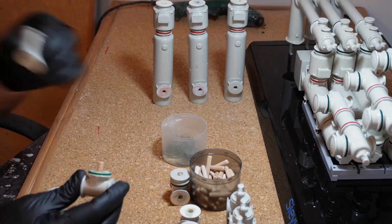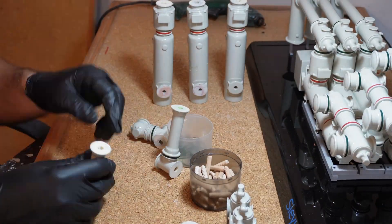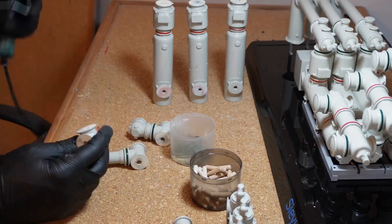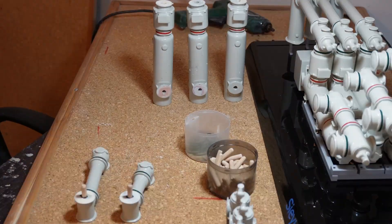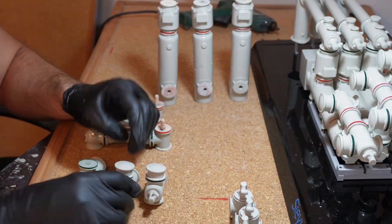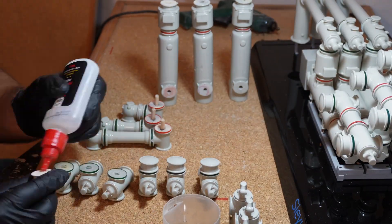We produce 10 sets of these scale models for our customer, each built entirely using the Flow system. These models are used to present actual systems to clients, which makes accuracy, surface quality, and consistency critically important. Every detail had to be precise, and Flow made that possible.